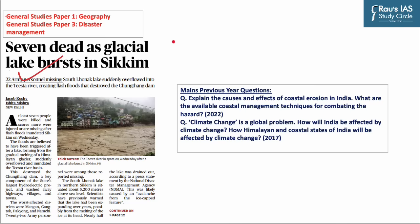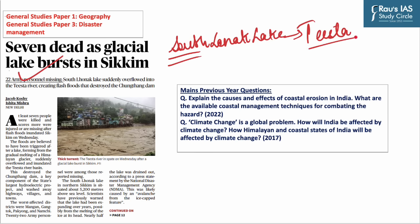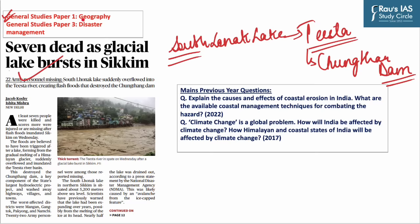The South Lhonak Lake suddenly overflowed into the Teesta River, creating flash floods that destroyed the Chungthang Dam. The topic is important from the General Studies Paper 1 perspective, forming part of geography, and General Studies Paper 3 on disaster management.